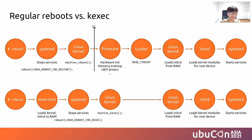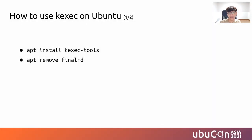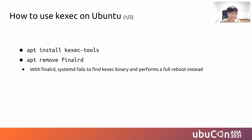Now that we have an idea of how kexec reboots work, we'll learn how to use kexec on Ubuntu. First, we will need kexec-tools. Second, we need to remove the finalrd package. With finalrd installed, systemd fails to find the kexec binary and performs a full reboot instead.